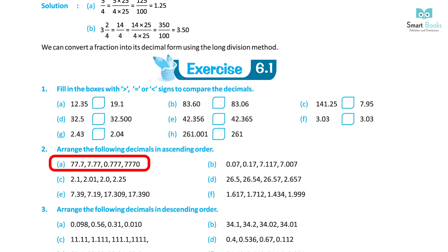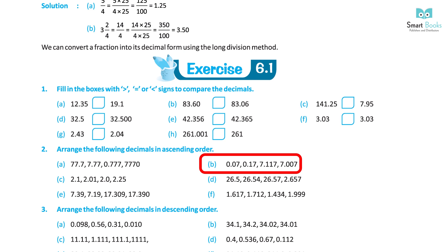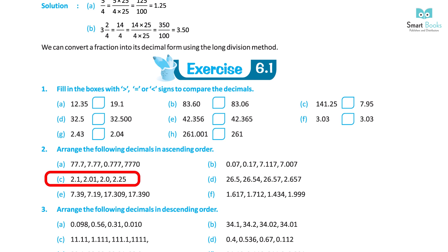Continuing Exercise 6.1, Question 1: F. 3.03 is equal to 3.03. G. 2.43 is greater than 2.04. H. 261.001 is greater than 261. Question 2: Arrange the following decimals in ascending order. A. 0.777, 7.77, 77.7 — Solution: 0.777, 7.77, 77.7.